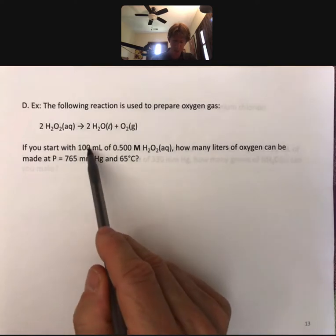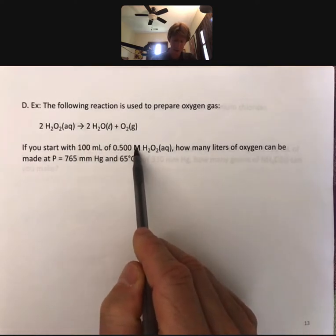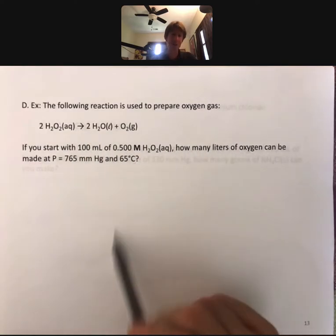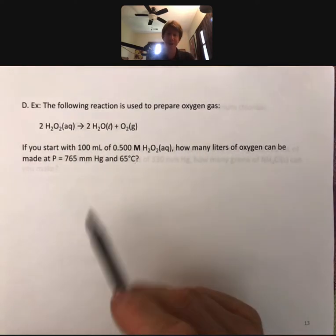You're taking milliliters and molarity, and you're turning it into moles, and then you're finding how many liters of oxygen using the ideal gas law, so that's a little help for that.